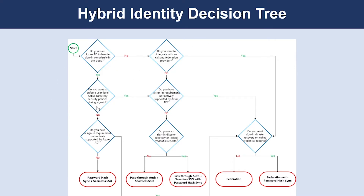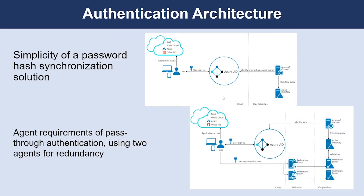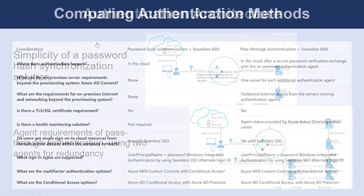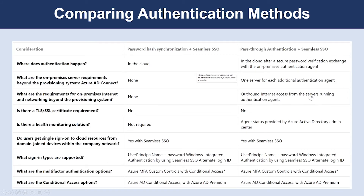Based on these questions, you can figure out whether your solution requires password hash sync, pass-through authentication with seamless single sign-on, or federation with password hash synchronization. This diagram explains the high-level architecture components required for each authentication method you can use with your Azure Active Directory hybrid identity solution, and provides an overview to help you compare the differences between these solutions. There is also a table which helps you define these comparisons to choose the best authentication method.